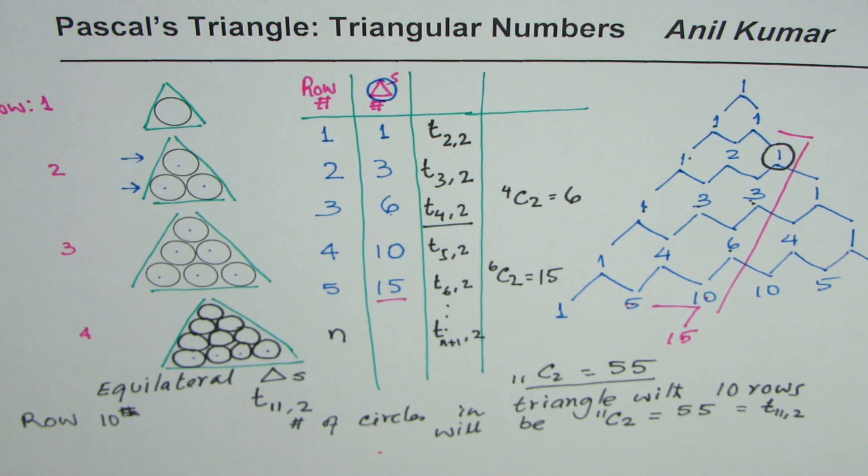So it is the third diagonal which represents all the triangular numbers. I hope that helps. Thank you and all the best.